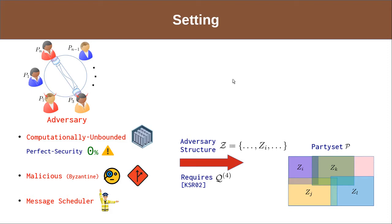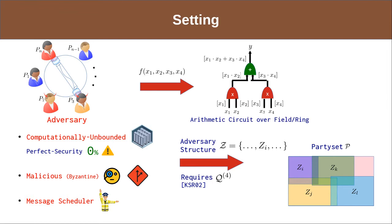The high-level idea of the MPC protocol is as follows. The parties represent the function they want to compute as an arithmetic circuit over a field or ring. The input values are then shared among the parties such that a sufficient set of parties can reconstruct the values, but the adversary learns nothing about the honest parties' inputs. For multiplication gates, the parties need to participate in an interactive protocol, while shares for addition gate outputs are locally computable. The parties compute shares of the output wire, which are then used to reconstruct the output.